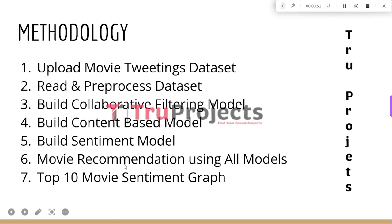The sixth module is Movie Recommendation Using All Models. In this module, we combine the outcomes of collaborative filtering, content-based, and sentiment models to generate movie recommendations for users. The recommendations are based on a combination of user preferences, movie characteristics, and sentiment analysis. By integrating multiple models, we aim to improve the reliability and accuracy of recommendations, particularly when the dataset has limited ratings for certain movies.